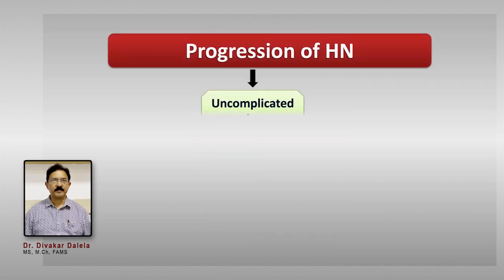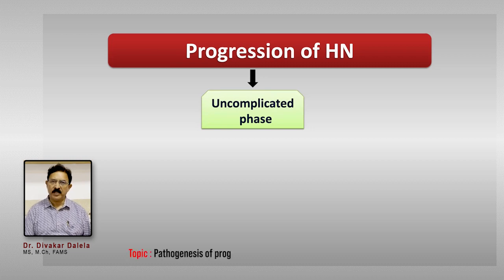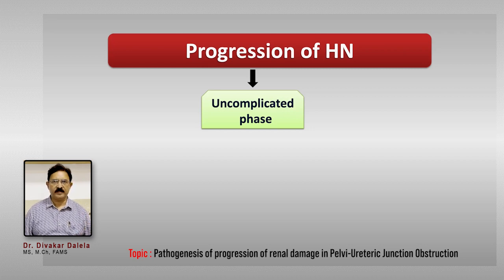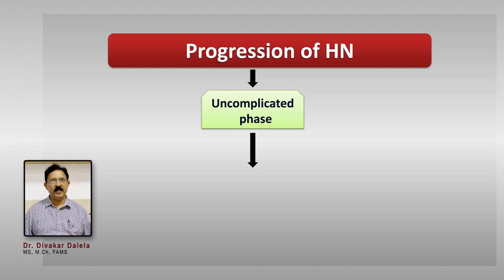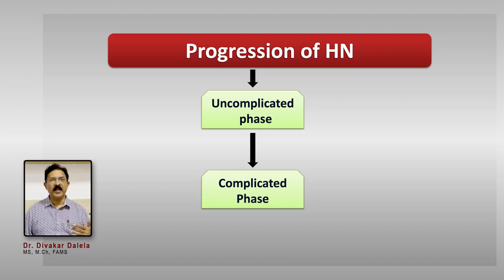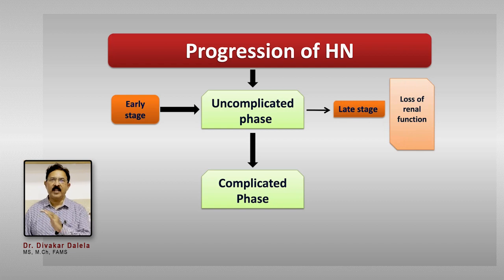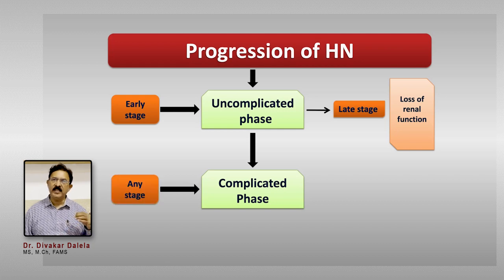How does this progression take place? Most patients who have PUJ obstruction remain with a hydronephrotic kidney and live like that for a very long duration. This phase I like to call the uncomplicated phase, where it is slowly progressing or may even be static. In some unfortunate patients, a complication develops and that sets in the complicated phase. In the uncomplicated phase, patients can come at an early or later stage, and when they come in adulthood or beyond, there is a variable degree of loss of renal function.